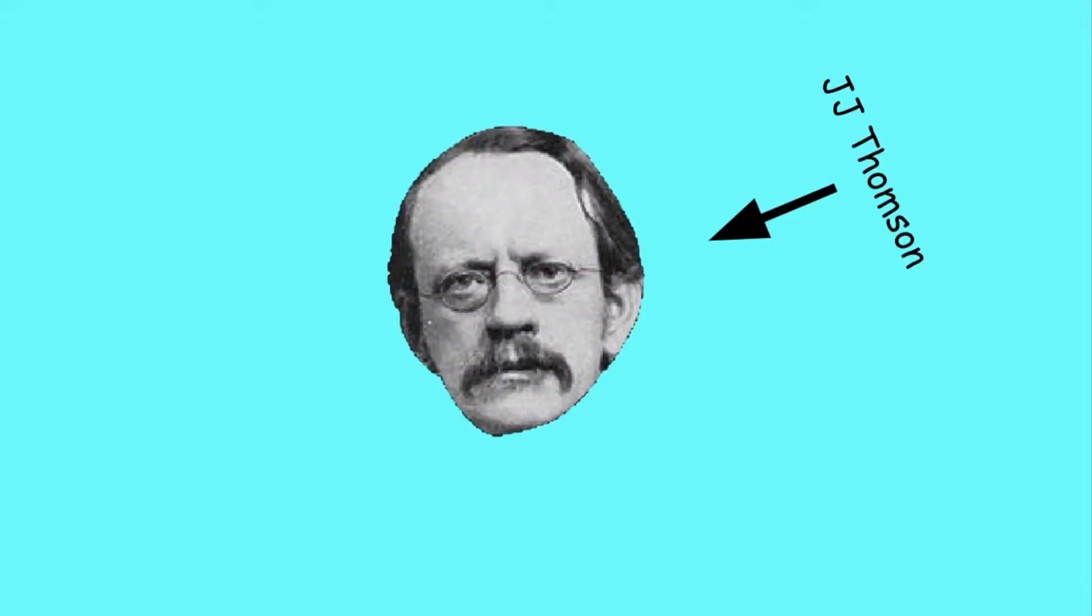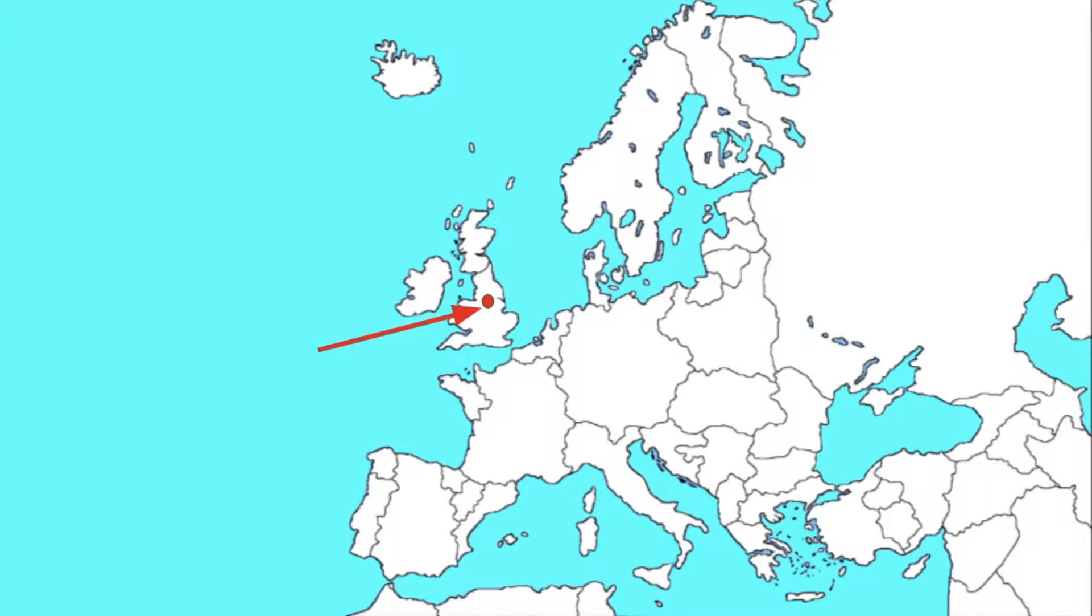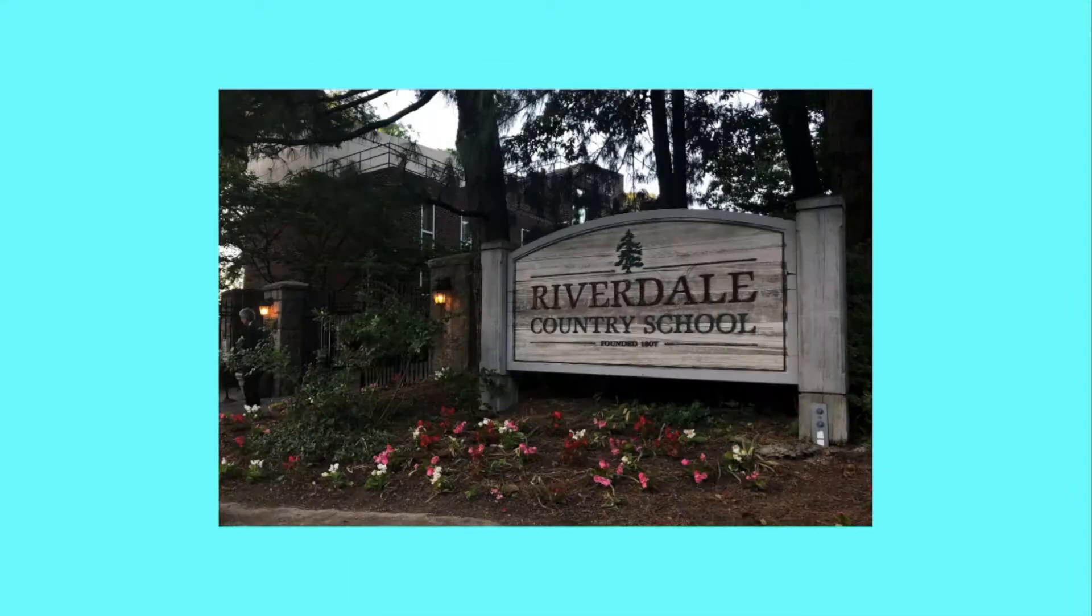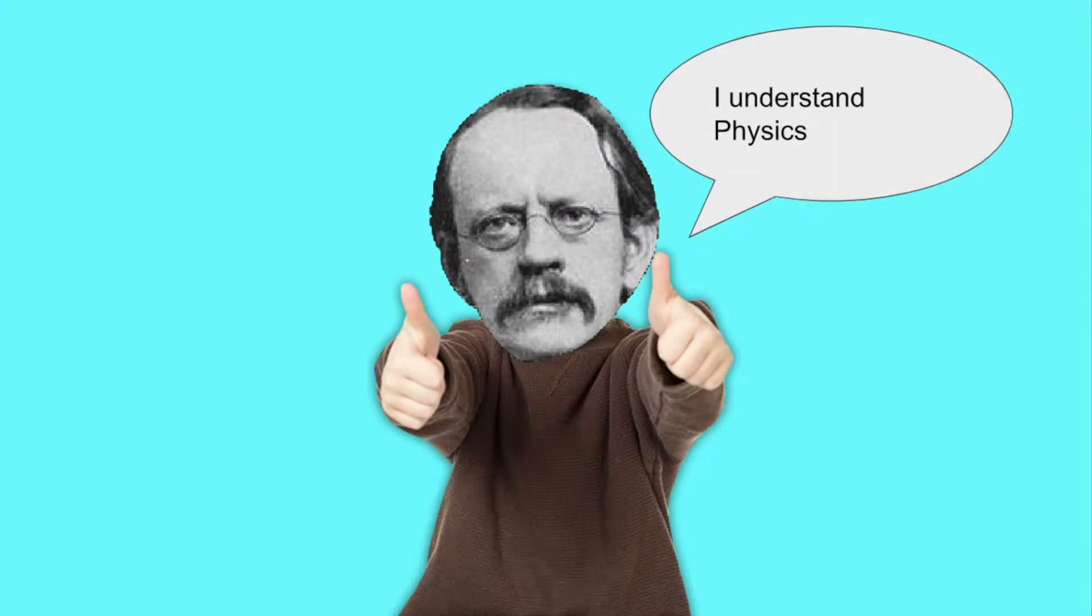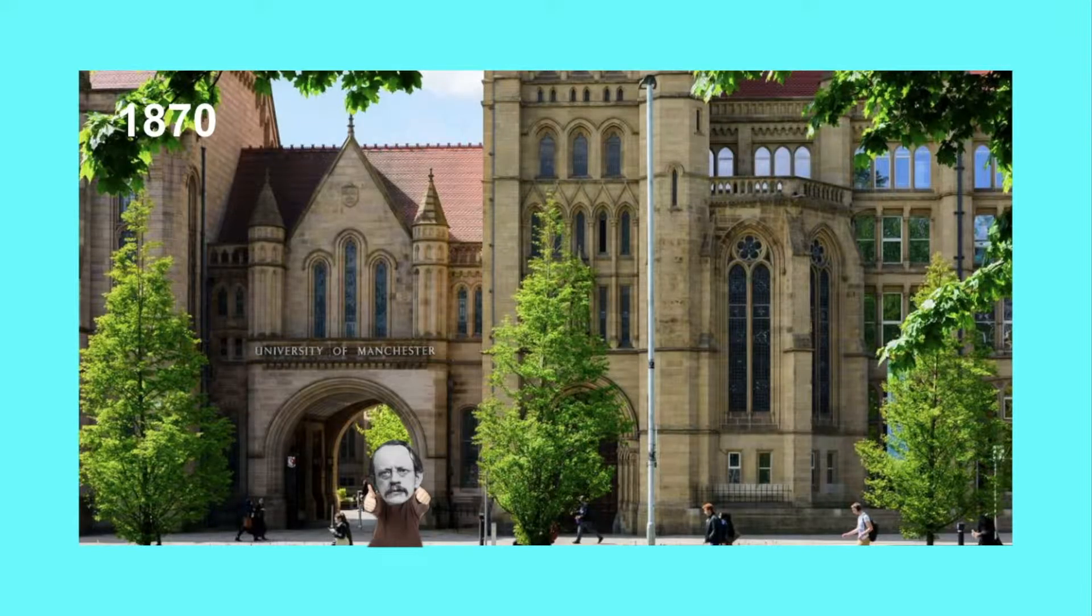J.J. Thompson was born on December 18th of 1856 in Cheatham Hill. Throughout his childhood, he often moved from one private school to another, always demonstrating superior understanding of physics. In 1870, at the age of 14, he admitted in Owens College, currently known as Manchester University.